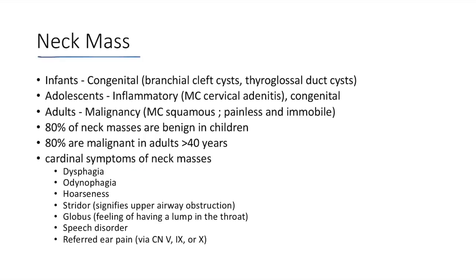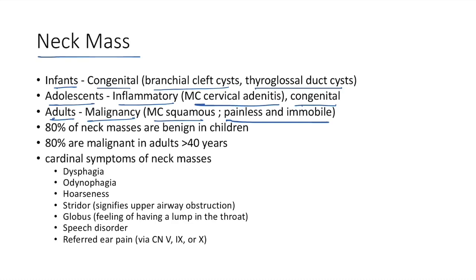Most common causes of neck mass by age: in infants — congenital causes like branchial cleft cysts and thyroglossal duct cysts; in adolescence — inflammatory causes, most commonly cervical adenitis, or congenital; in adults — most common cause is malignancy, most commonly squamous cell carcinoma. Neck mass in malignancy will be painless and immobile. Eighty percent of neck masses are benign in children.